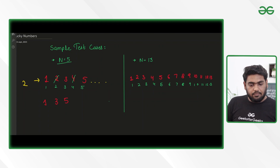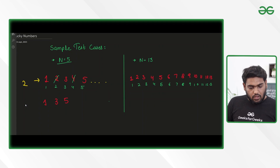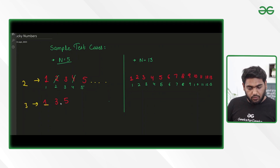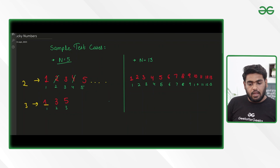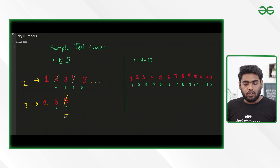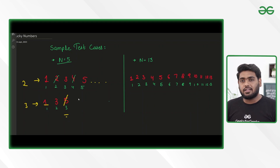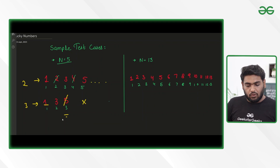This time we have to cancel with 3 — every third number. In the next pass, let me write down the indexes. Once we cancel every third element, we see that 5 is getting cancelled. So if we are encountering a number that is getting cancelled in the sequence, that means it is not a lucky number. In this scenario, we are going to return false.